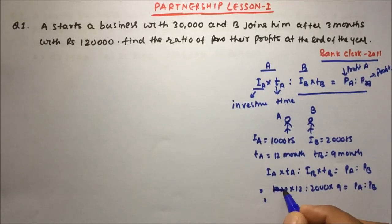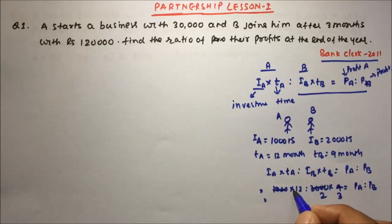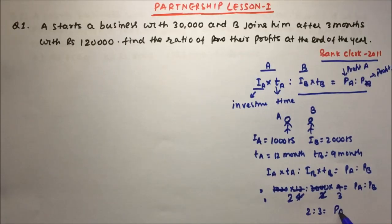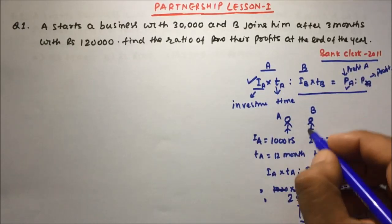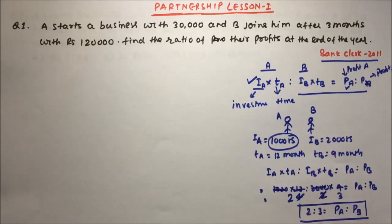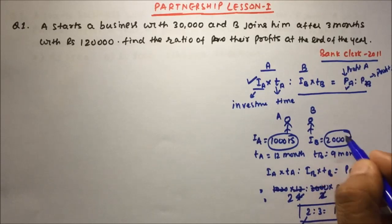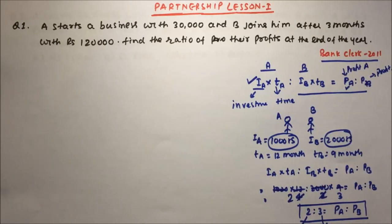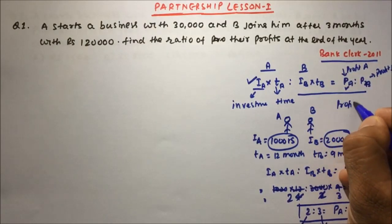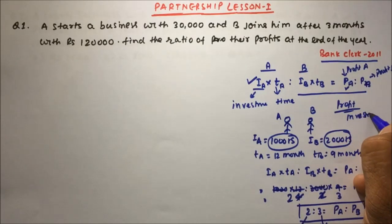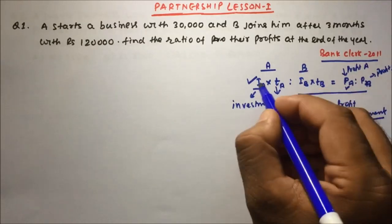Simplifying: dividing through, we get 2 : 3 as the profit ratio. What I want to say is your profit depends on how much you invest. A invested less — 1000 rupees — so A's profit ratio is less. B invested more, so B's profit ratio is more. In partnership, your profit totally depends upon your investment.